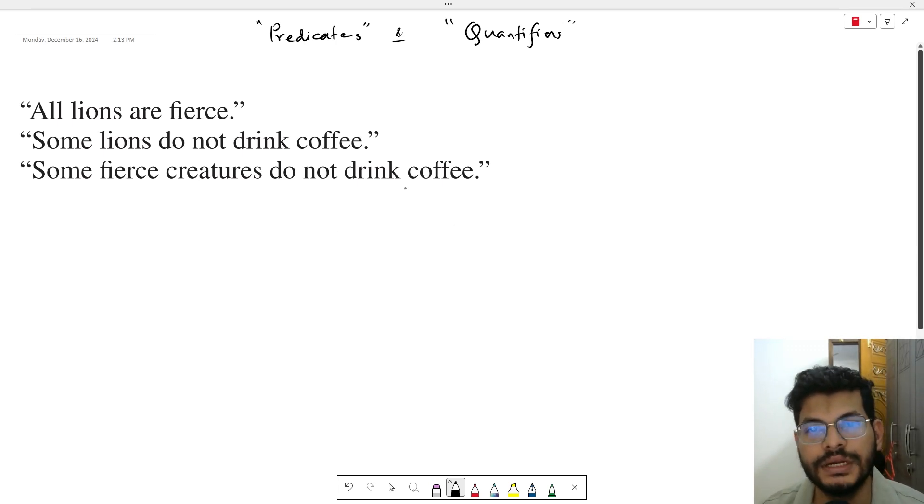We are going to convert these sentences into logical statements. No need to restrict the domain. F of X is the predicate, and we are talking about lions.